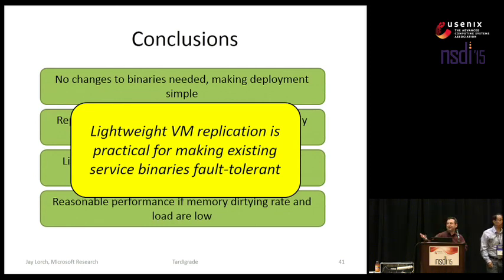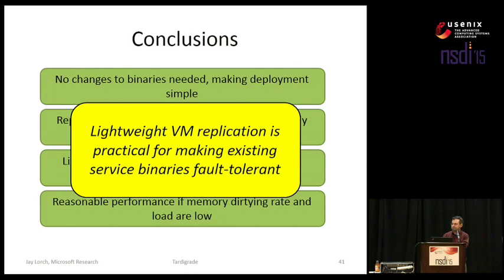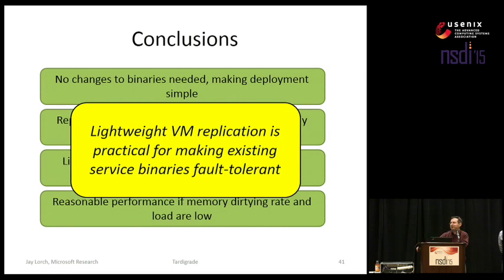Question from audience: The ZooKeeper comparison is a potentially illuminating one. Which failures does this sort of replication protect against? What's the relationship between the set of failures ZooKeeper tolerates versus what you get from replicating VMs like this? Answer: The kinds of failures that you cannot tolerate with lightweight virtual machine replication are failures of the service itself — bugs in the service — because we assume a fail-stop model. Arguably, there are fewer opportunities for such bugs because our implementation of ZooKeeper is simpler.